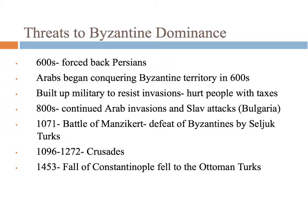The Byzantines had a lot of threats over time. The Arabs, who we just studied, were constantly trying to invade and take away territory — they're right next door in the Middle East. That started around 600 CE. In the 800s they continued to have problems with Arab invasions and Slav attacks — Slavs being a different ethnic group from Eastern Europe. Then they had invasions by the Seljuk Turks, the Crusades, which we'll learn about this week. Eventually Constantinople fell to the Ottoman Turks in 1453. Invasions and people stealing territory were a major issue throughout their whole history.